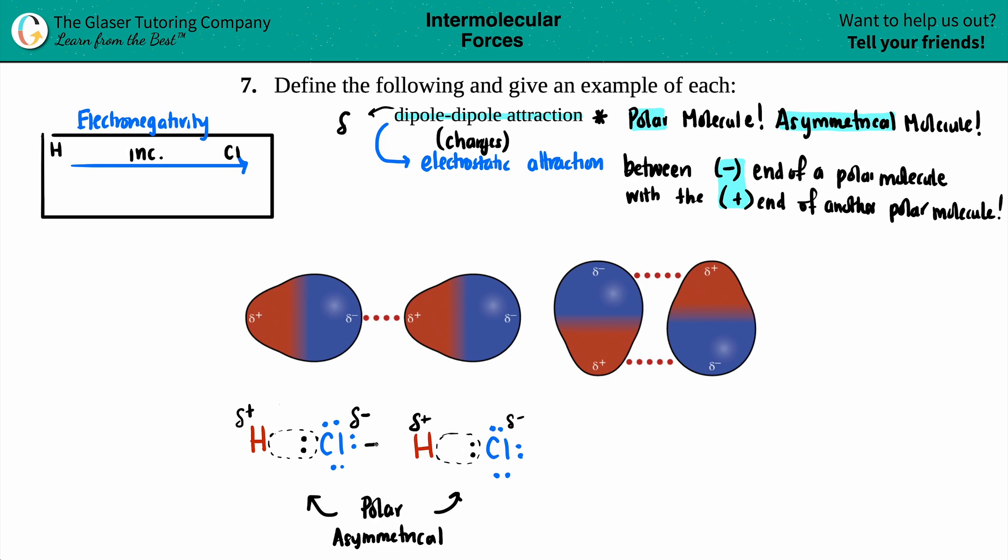And this attraction of the negative goes with the positive. That's the dipole force. This is the dipole-dipole attraction. It's the attraction between the two molecules at the different charged ends. So this would be like H and this will be Cl.